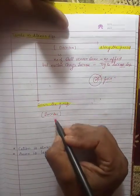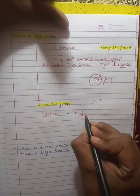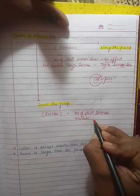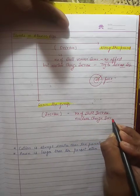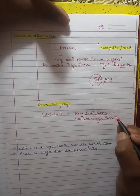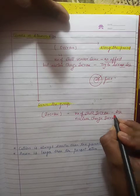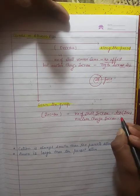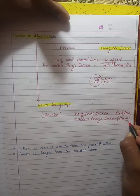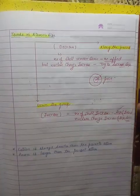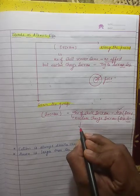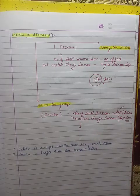As we go down the group, the number of shells increases and the nuclear charge also increases. Due to increasing number of shells, the size increases; due to increasing nuclear charge, the size decreases — these are opposing effects. But the first factor (number of shells) dominates over the second factor (nuclear charge), and overall, as we go down the group, atomic size increases.